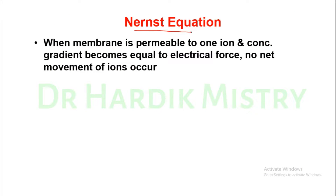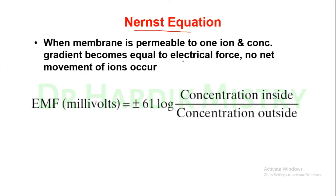Now the Nernst equation. The Nernst equation applies when the membrane is permeable to only one ion and the concentration gradient becomes equal to the electrical force, so that no net movement of that ion occurs. Remember, this equation works only for a single ion — either sodium or potassium.